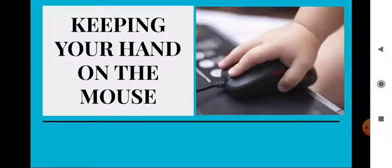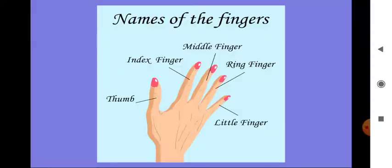Next, we have the topic of keeping your hand on the mouse. There is a correct way to hold the mouse, so first we need to know the names of the fingers. We have five fingers in one hand. The names are: thumb, index finger (also called the four finger), middle finger, ring finger, and little finger.